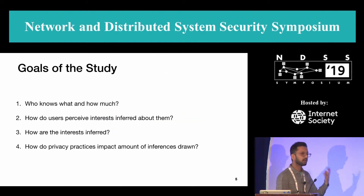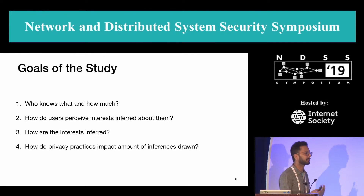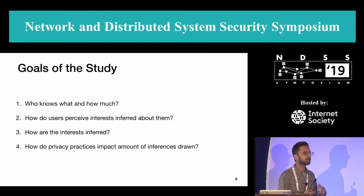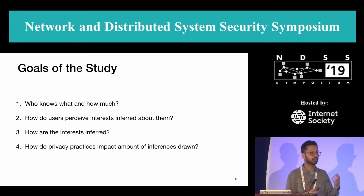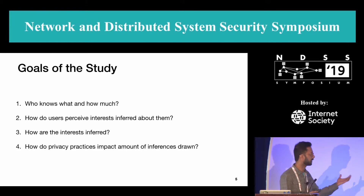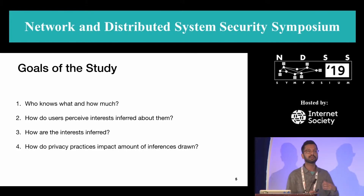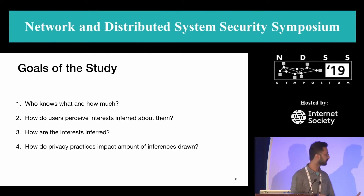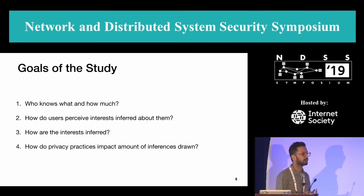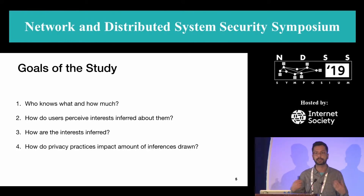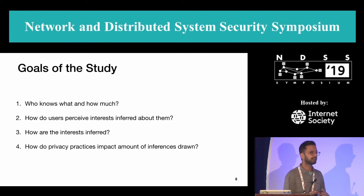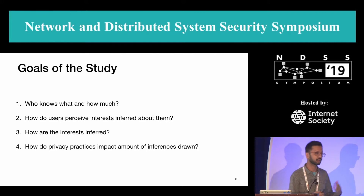The goal of the study is to know who is looking at what information and exactly how much they know about you. We also want to know how users perceive these interests which are inferred about them by these companies. We also look at the origin of these interests — how are these inferences drawn. And the fourth goal is whether using any privacy-conscious behavior, such as tracker-blocking extensions, reduces the amount of inferences drawn by these companies.